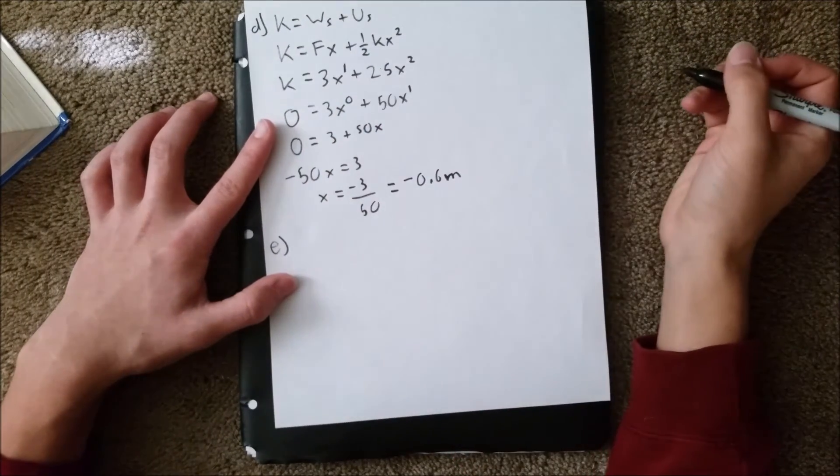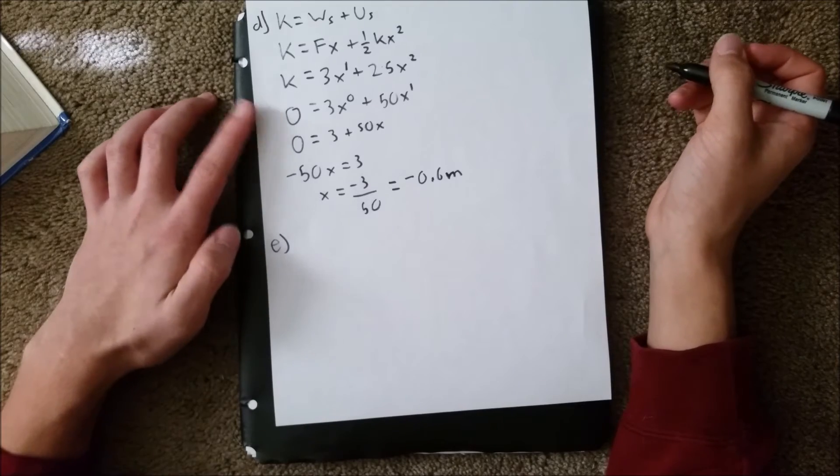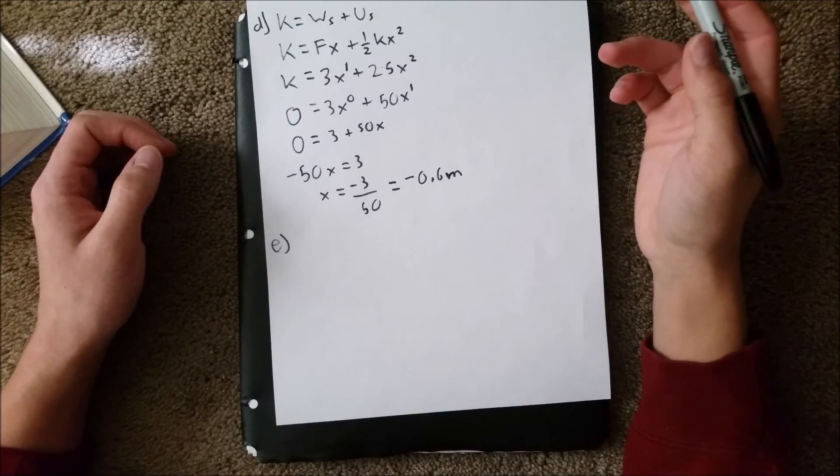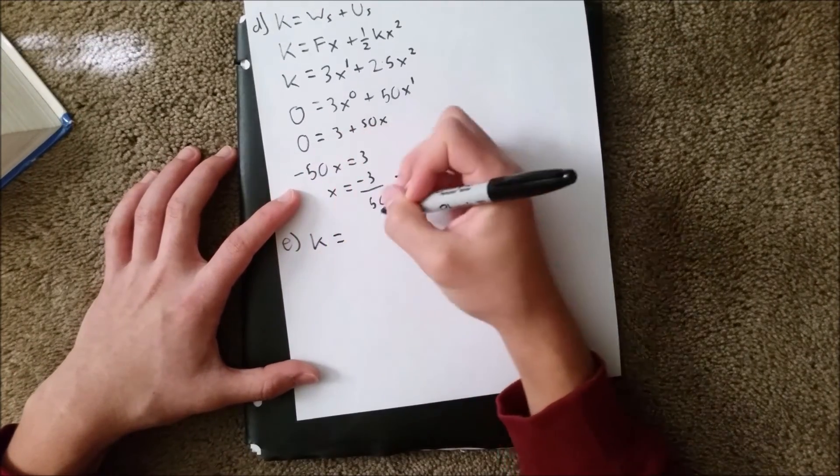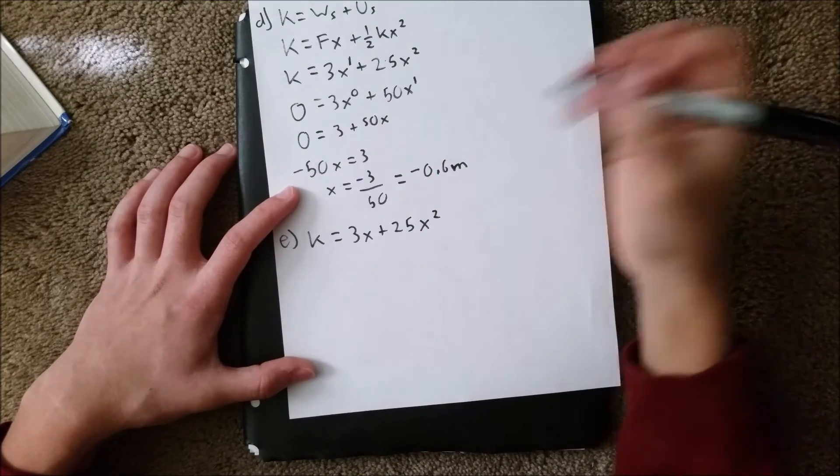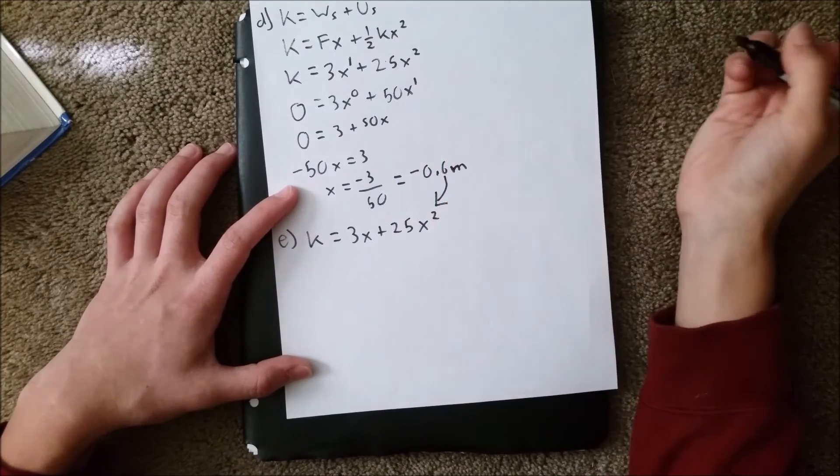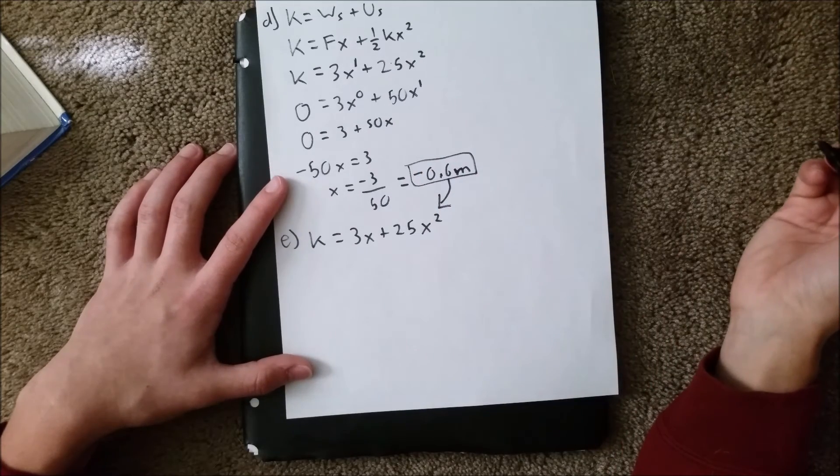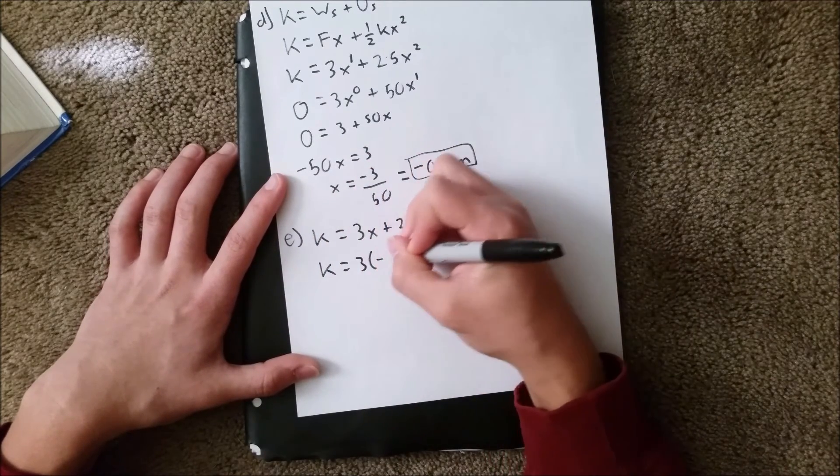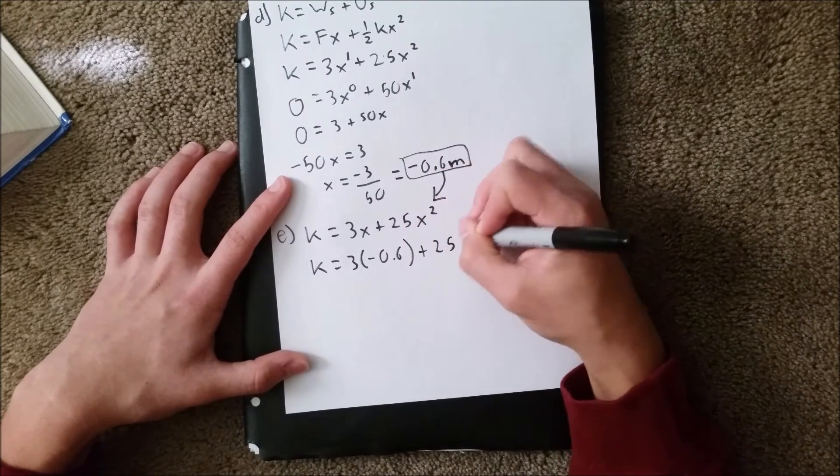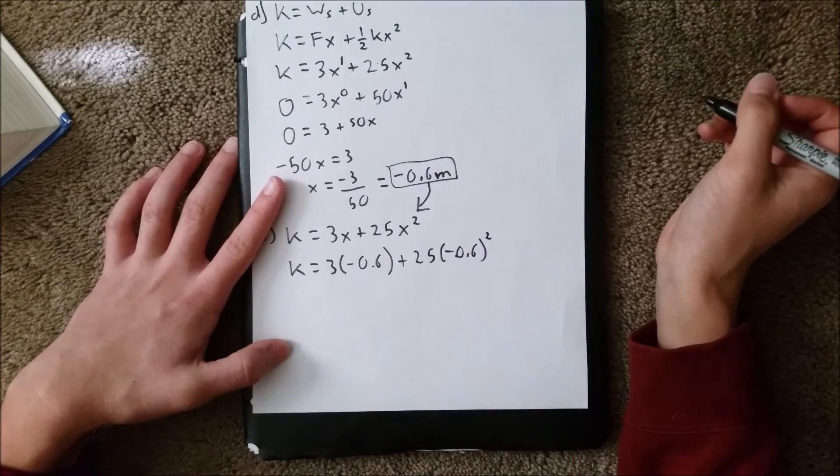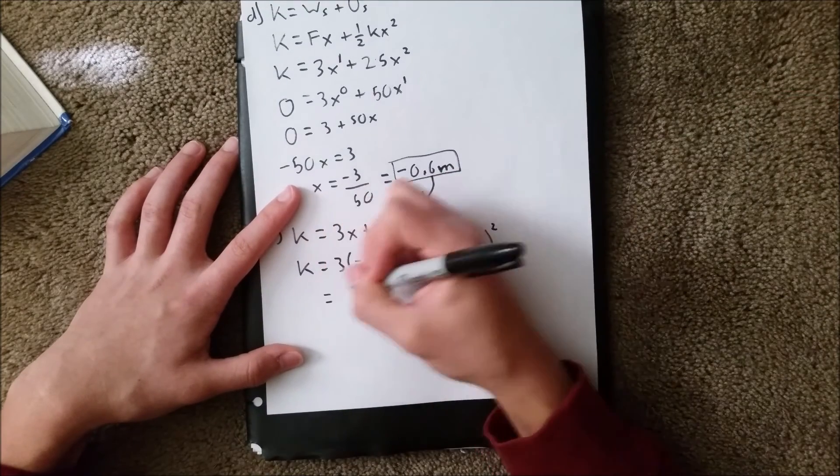Lastly, part E asks for the value of the maximum kinetic energy. Since we just found the position of the maximum kinetic energy, we can take the equation of kinetic energy, which was k equals 3x plus 25x squared. When you plug that into your calculator, that is going to give you the maximum kinetic energy.